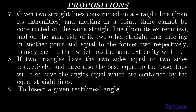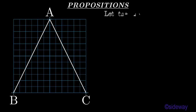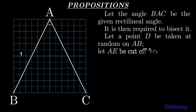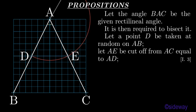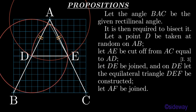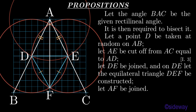Proposition 9. To bisect a given rectilineal angle. Let the angle BAC be the given rectilineal angle. It is then required to bisect it. Let a point D be taken at random on AB. Let AE be cut off from AC equal to AD, by Book 1 Proposition 3. Let DE be joined, and on DE let the equilateral triangle DEF be constructed. Let AF be joined.